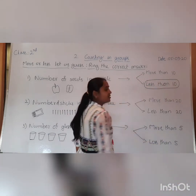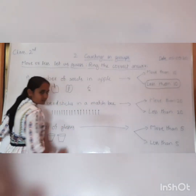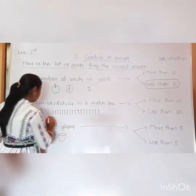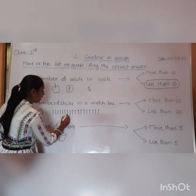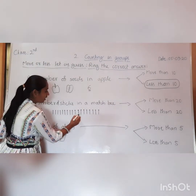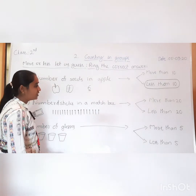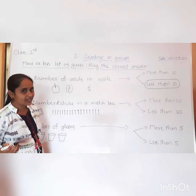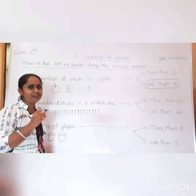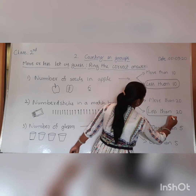Six is less than ten. Bring the answer. Next question: number of sticks in a matchbox. Here they are given a matchbox. How many matchsticks are there? Count: one, two, three, four, five, six, seven, eight, nine, ten, eleven, twelve, thirteen, fourteen, fifteen, sixteen, seventeen, and the last one is eighteen. Is eighteen more than twenty or less than twenty? Eighteen is less than twenty. Bring the answer.